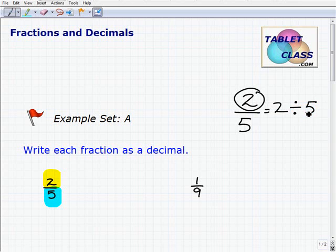Everyone should have a calculator, hopefully, at this level. So 2 divided by 5 is 0.4. So this is equal to 0.4, and that's it. It's actually very easy.